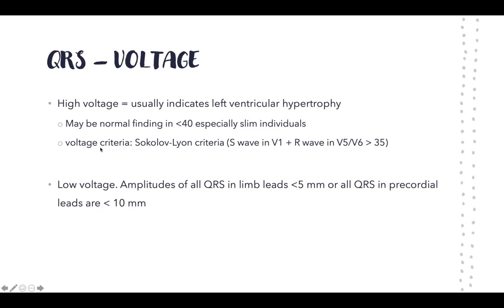There are a number of different criteria. We'll use the Sokolow-Lyon criteria, assessing the S-wave in V1 and the R-wave in V5 or V6 — whichever is taller — and adding these two together. If the sum is more than 35 millimeters, it indicates left ventricular hypertrophy.